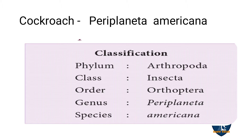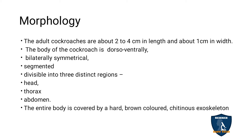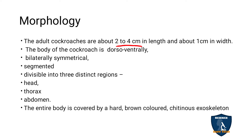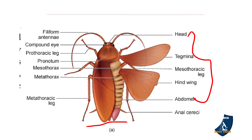First we will deal with the external characteristics, that is the morphology. The size of the cockroach: the length is 2 to 4 centimetres and the width is 1 centimetre.